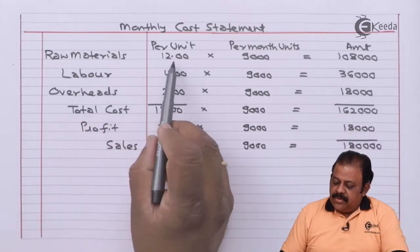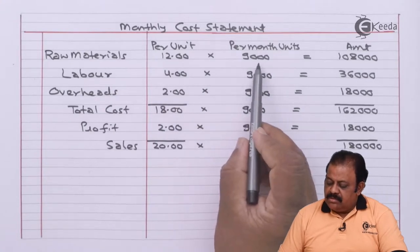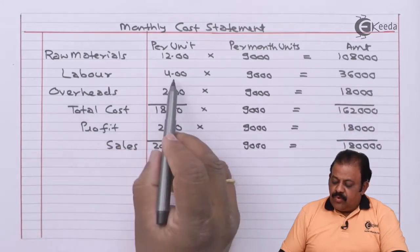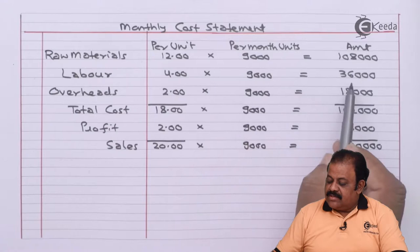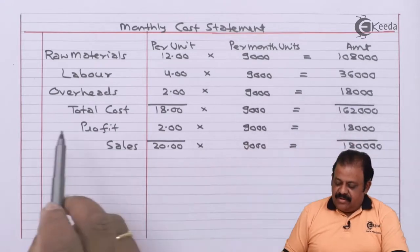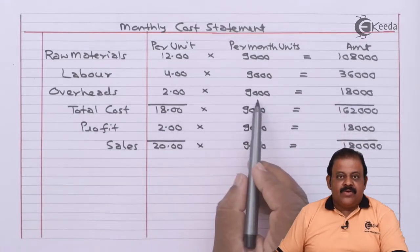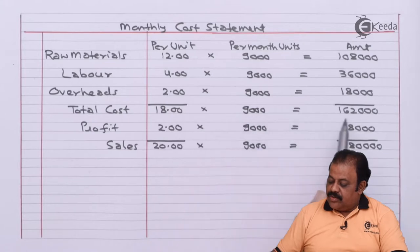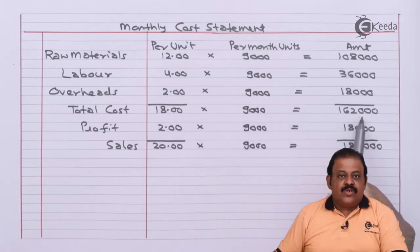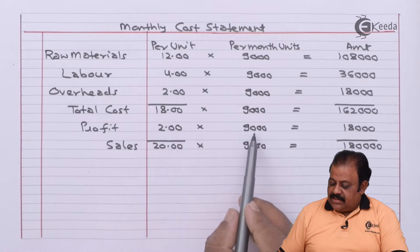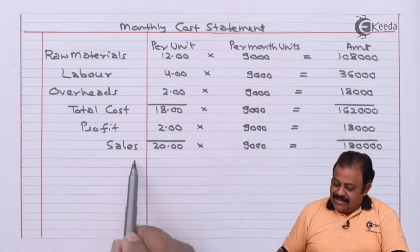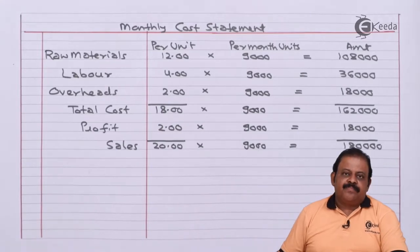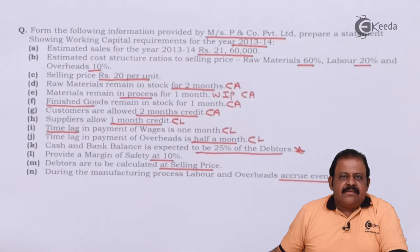Monthly cost calculations: Raw material — rupees 12 per unit × 9,000 units = rupees 1,08,000. Labour — rupees 4 per unit × 9,000 units = rupees 36,000. Overheads — rupees 2 per unit × 9,000 units = rupees 18,000. Total cost — rupees 18 per unit × 9,000 units = rupees 1,62,000 per month. Profit — rupees 2 × 9,000 units = rupees 18,000. Selling price — rupees 20 × 9,000 units = rupees 1,80,000 per month.